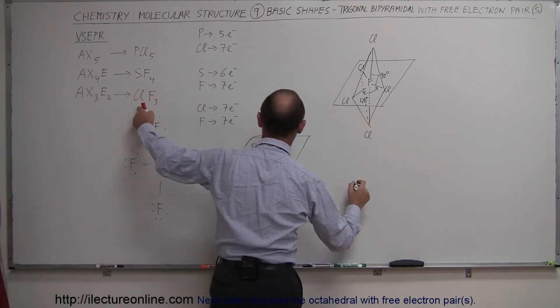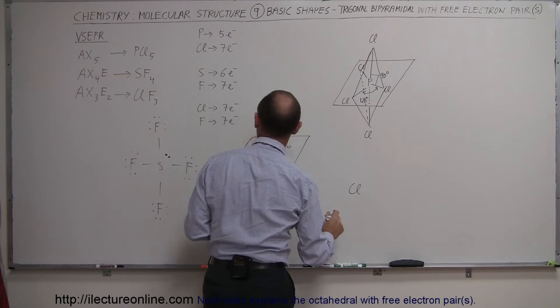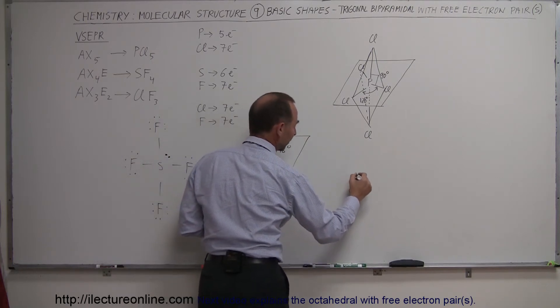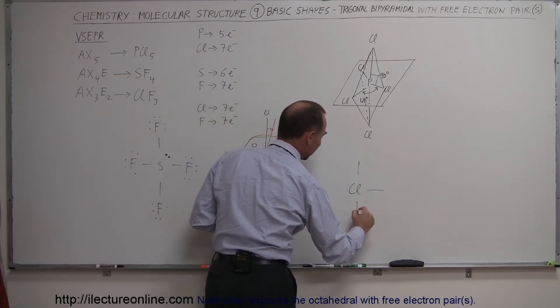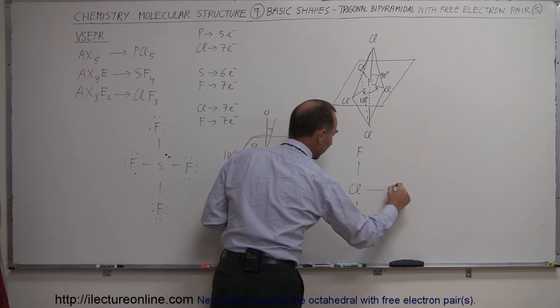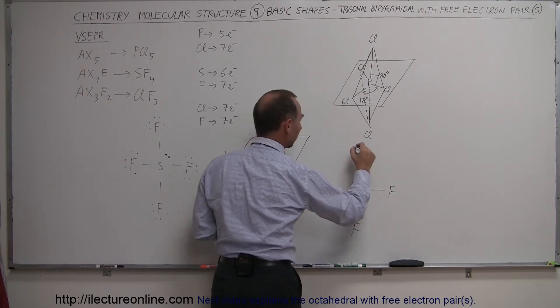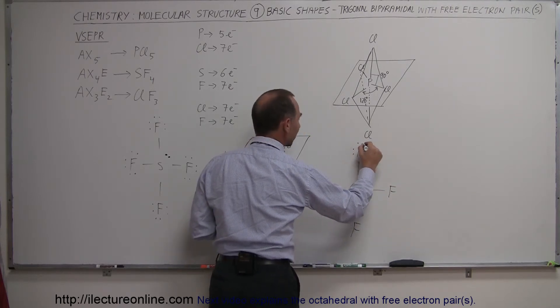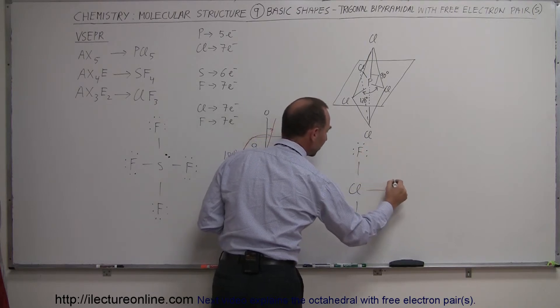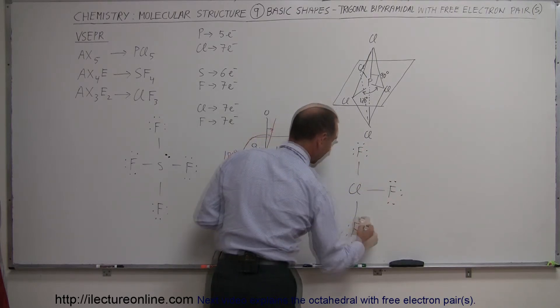So we start out with the central atom is chlorine, it has seven free electrons, so plenty of atoms to bond with the fluorine, like so. These have seven electrons, so they have each three free electron pairs, like so.